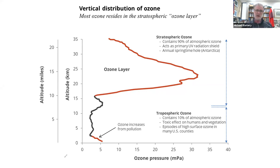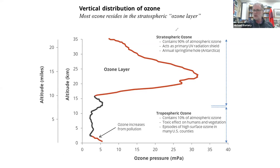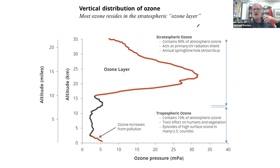This diagram plots the vertical distribution of ozone — how ozone is distributed vertically from the ground up on average through the atmosphere. You can see this little increase in ozone at the surface, from the ground up to a kilometer or two — that is the tropospheric ozone, the low-level pollutant ozone from chapter four. It amounts to about ten percent of all the ozone in the atmosphere, and that's the problematic component.